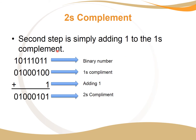To go from ones complement to twos complement, we just add one — simple. So this is the normal binary number, we complement it so all the ones become zeros and all the zeros become ones, and once we have this, we add one.